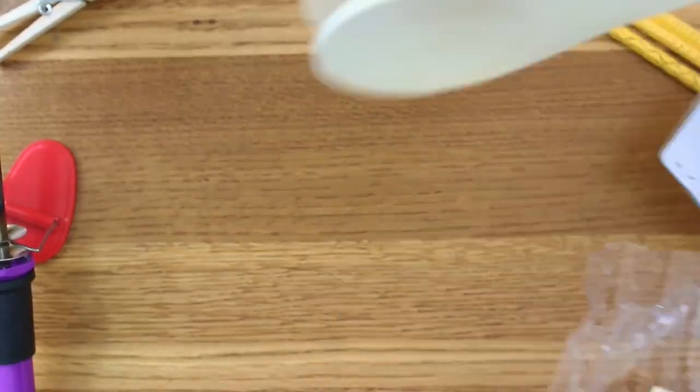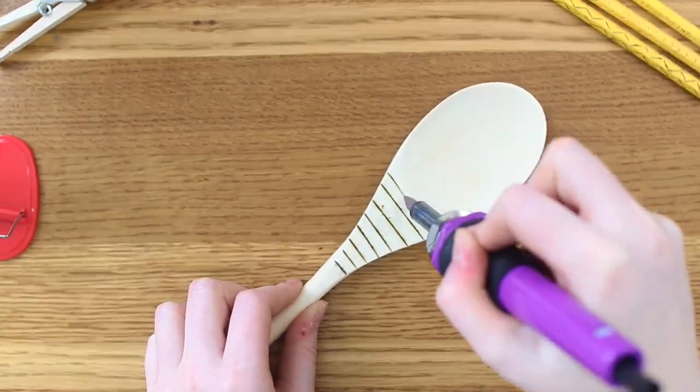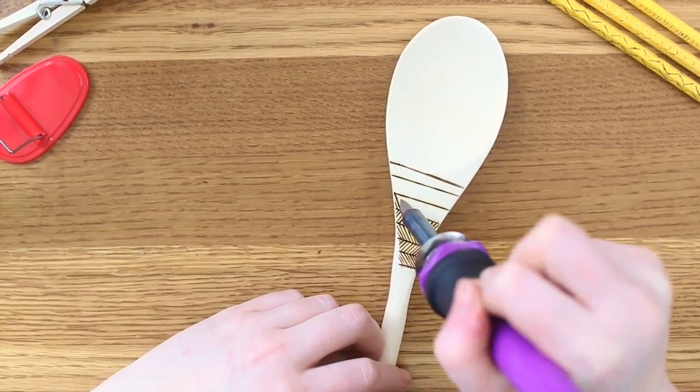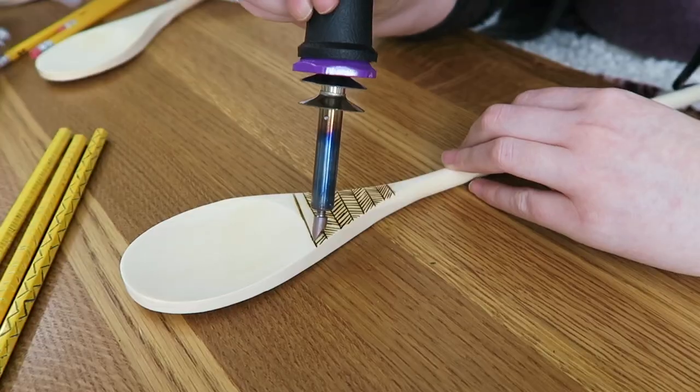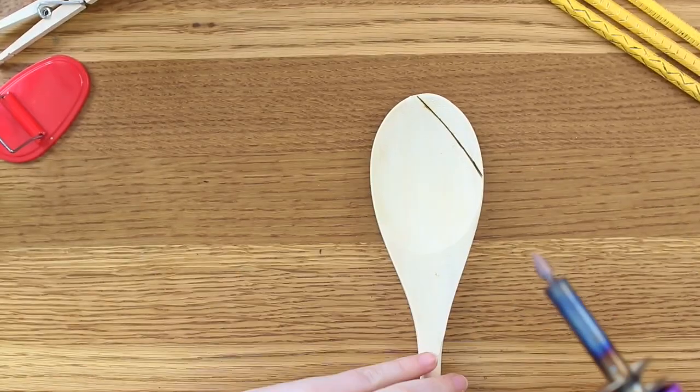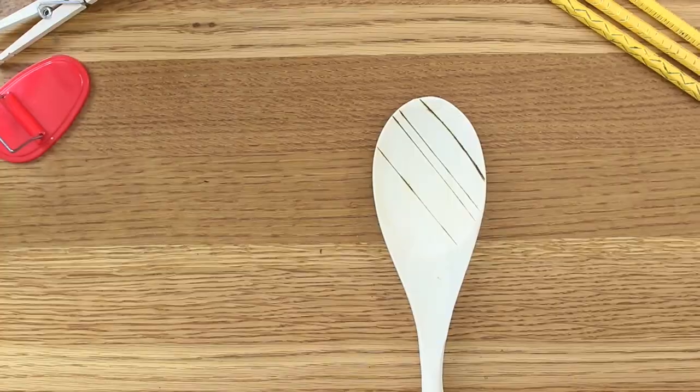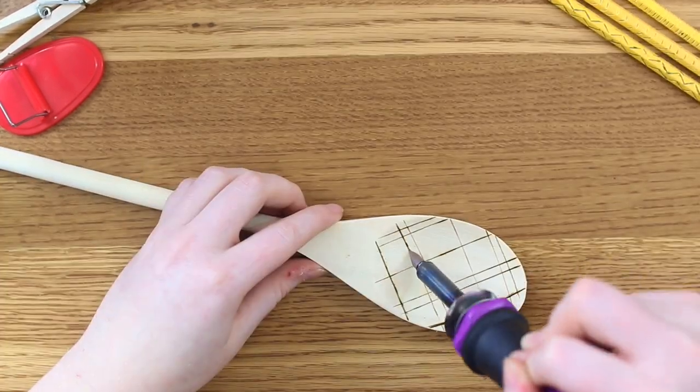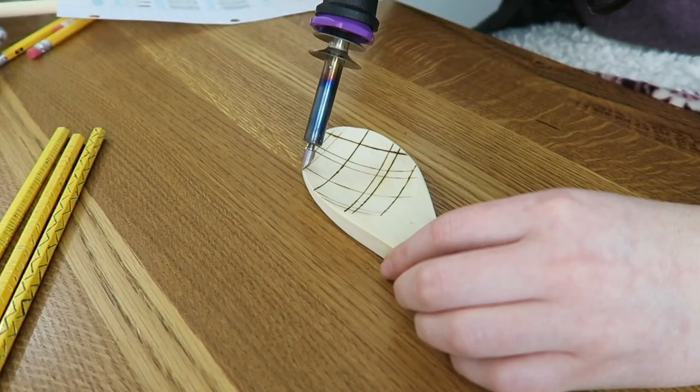Then we have one of my favorite things that I did, which was these wooden spoons. I just picked up a pack of like eight or nine from Meijer, and I just did different designs, different line work. I thought these were really, really cute.